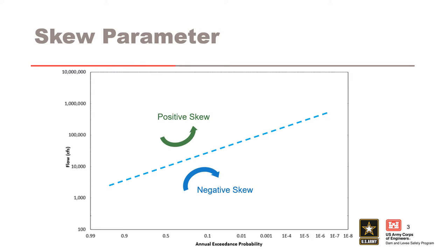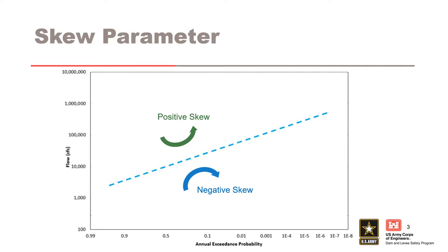We'll start by discussing the skew parameter of LP3, which measures the asymmetry of the distribution. A log normal distribution has zero skew and plots as a straight line on a normal probability log plot. A positive skew produces an upward curvature as the long upper tail reaches higher vertically on the right, and a positively skewed LP3 is bounded below. A negative skew produces a downward curvature as the long lower tail reaches downward on the left and the short upper tail pulls downward on the right, and a negatively skewed LP3 is bounded above.